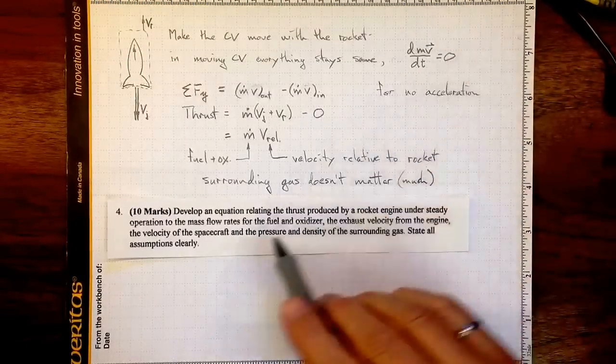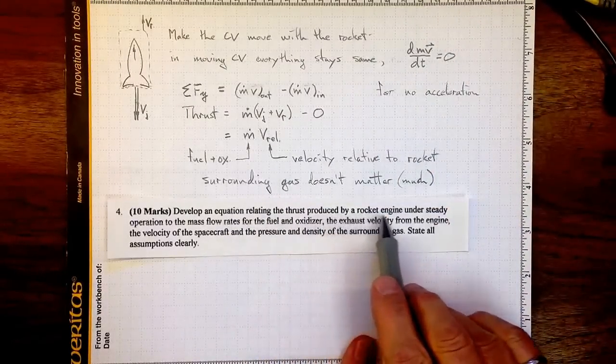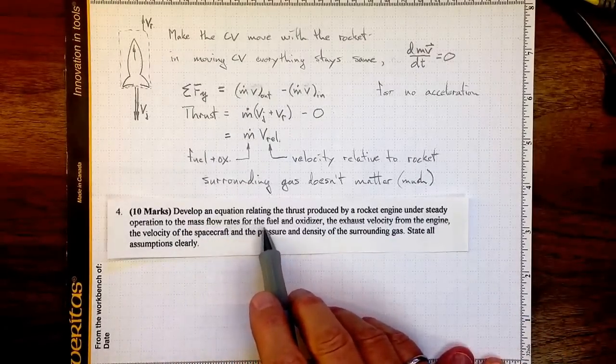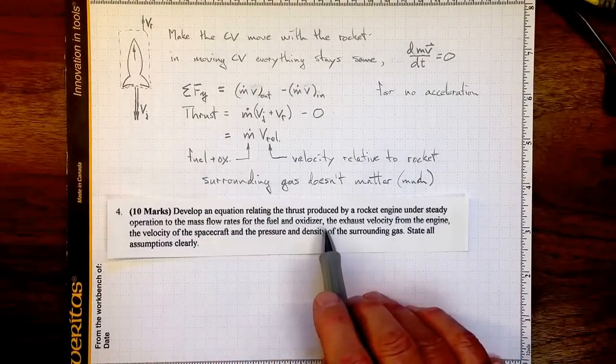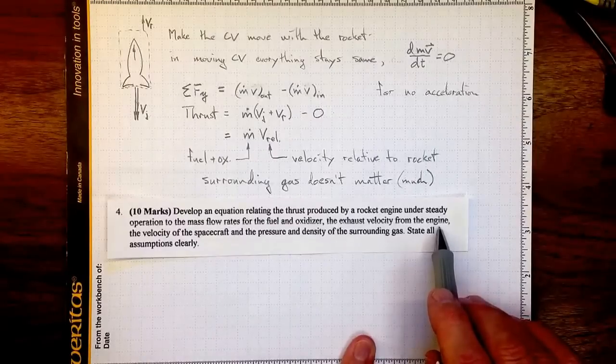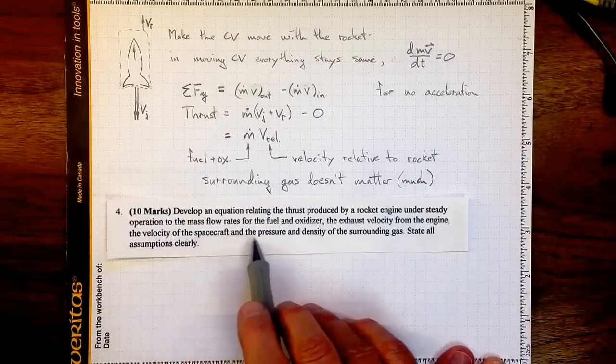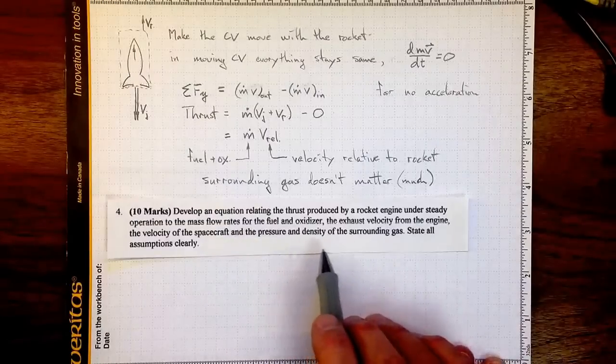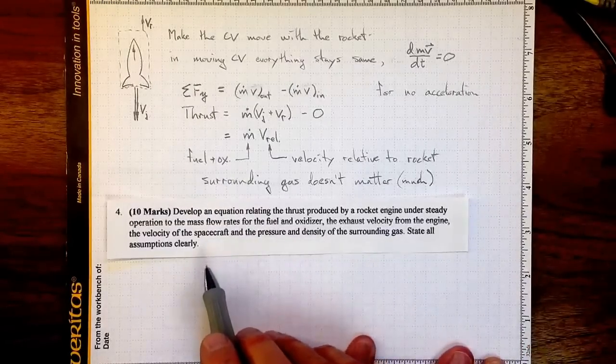This question asks us to come up with an equation relating the thrust produced by a rocket engine under steady operation to the mass flow rates for the fuel and oxidizer and the exhaust velocity from the engine, the velocity of the spacecraft, and the pressure and density of the surrounding gas. State all assumptions clearly.